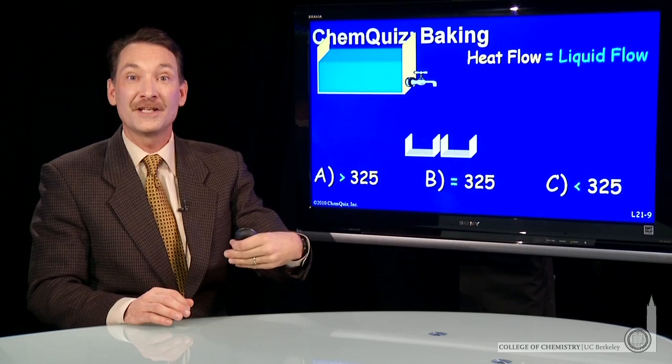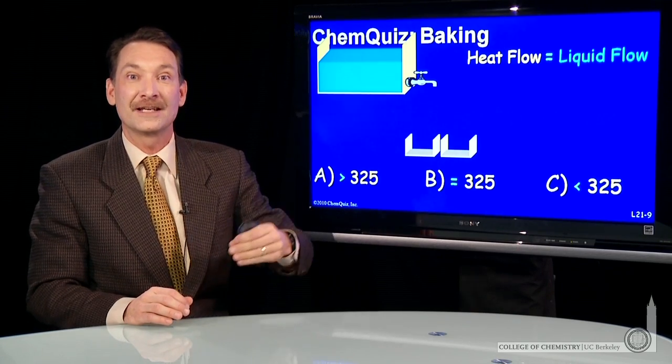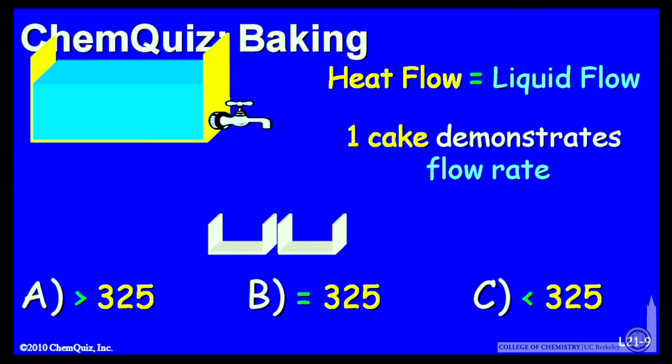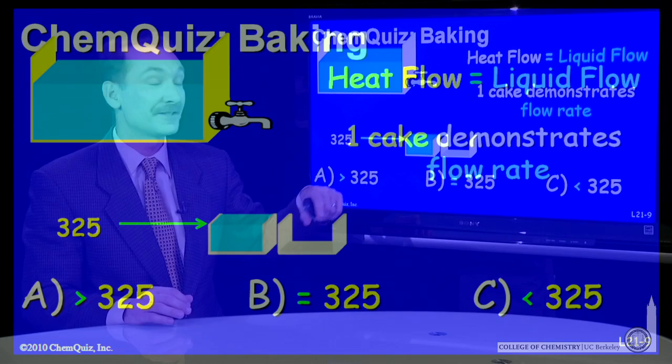That is, the oven can only heat at a certain rate. It can only deliver a certain amount of joules per second. So the first cake demonstrates that flow rate. It says, how long does it take to raise the temperature to 325 degrees? Or in the water analogy, how long does it take to raise the height of a flask?